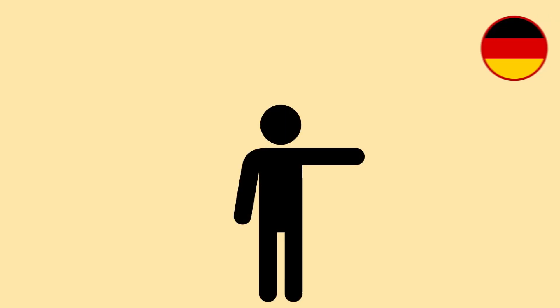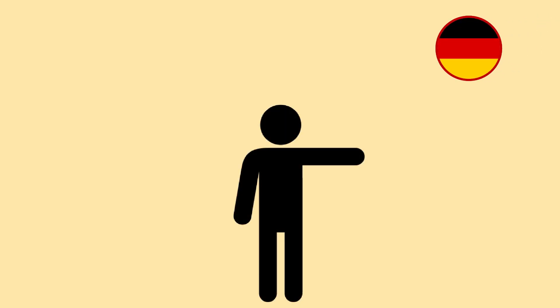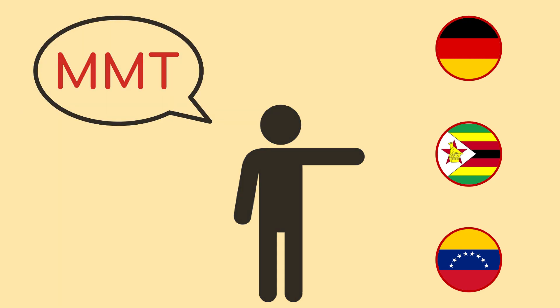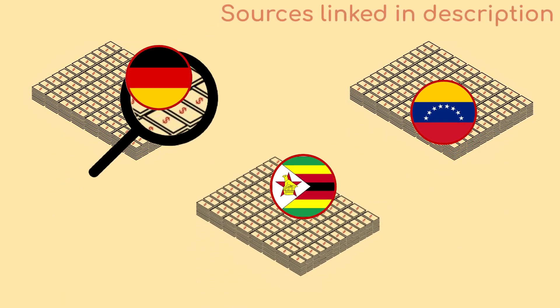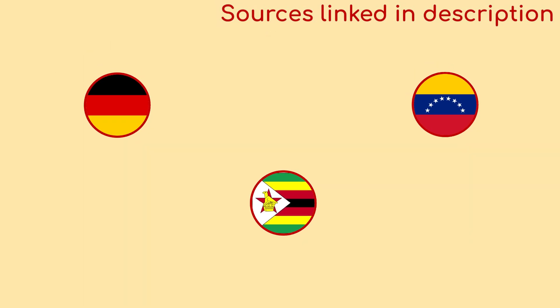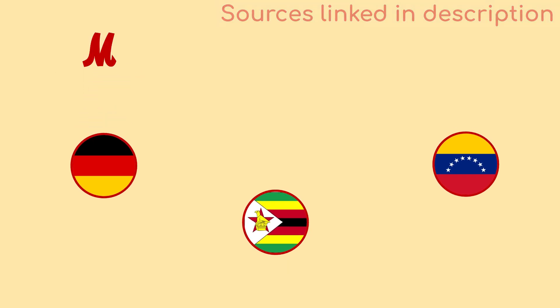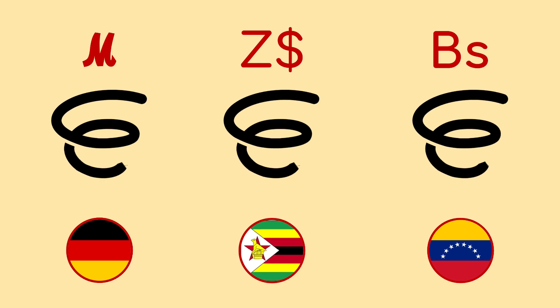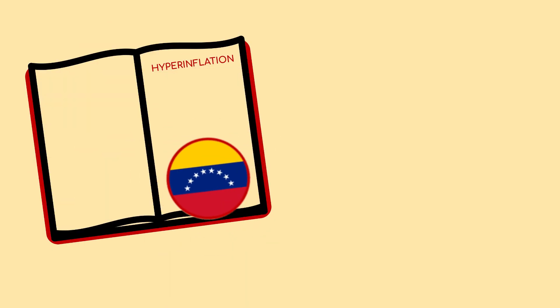A lot of people point to Weimar Germany, Zimbabwe and Venezuela as examples of the dangers of MMT. But let's have a closer look at hyperinflation in these three examples. All three had distinctly similar factors that led to the spiralling devaluation of their currency. While they can teach us some lessons about hyperinflation, they're nothing to do with MMT.